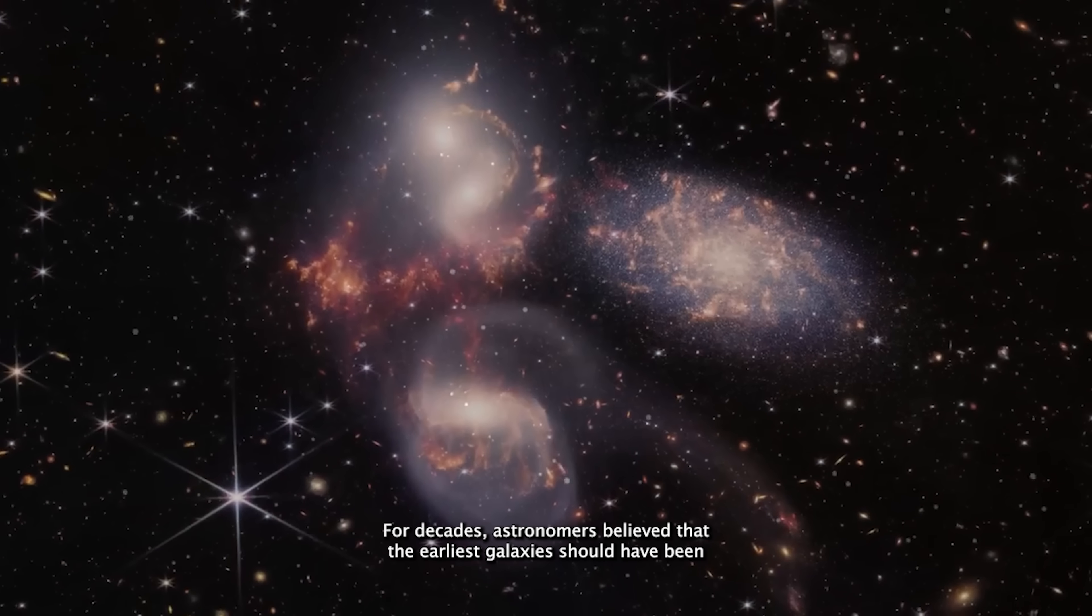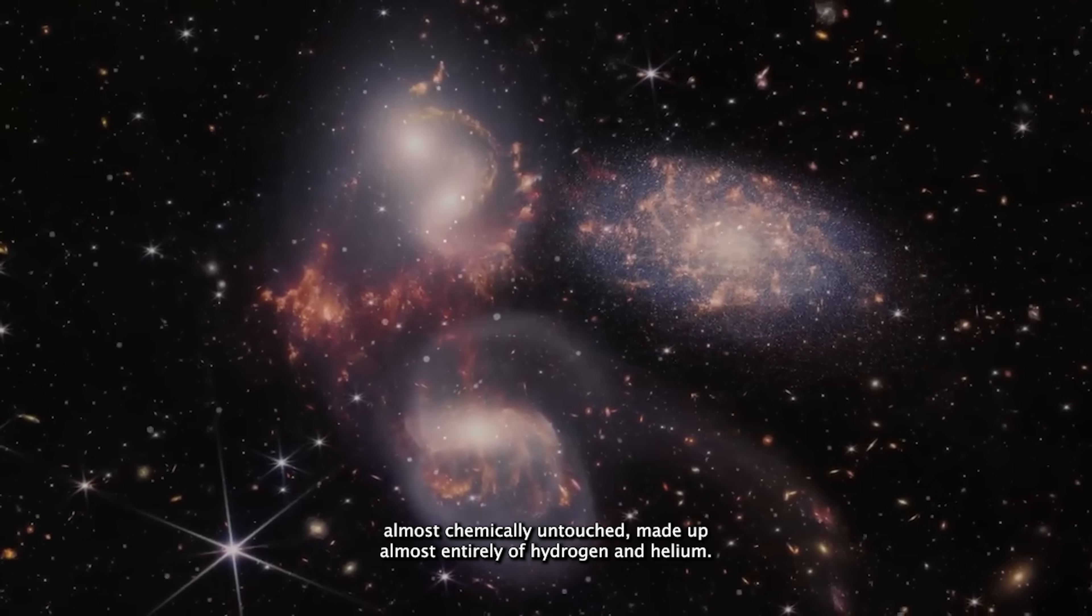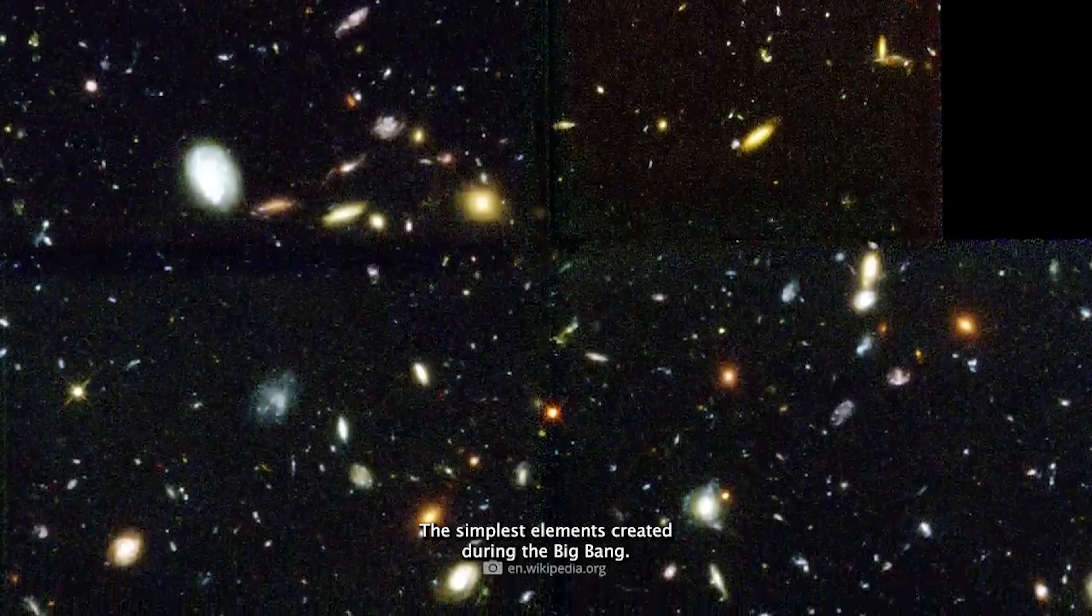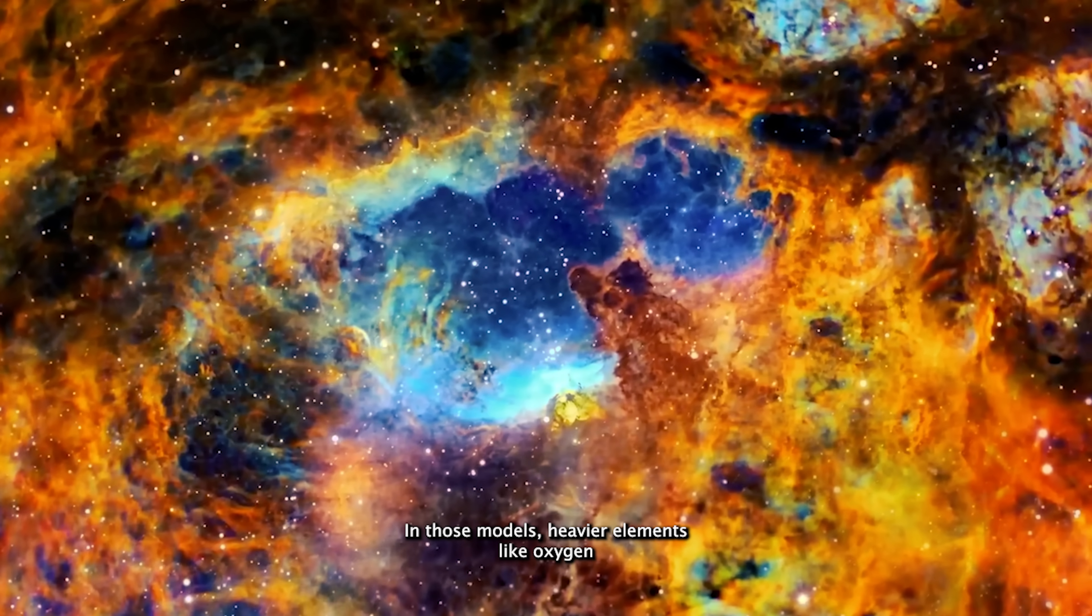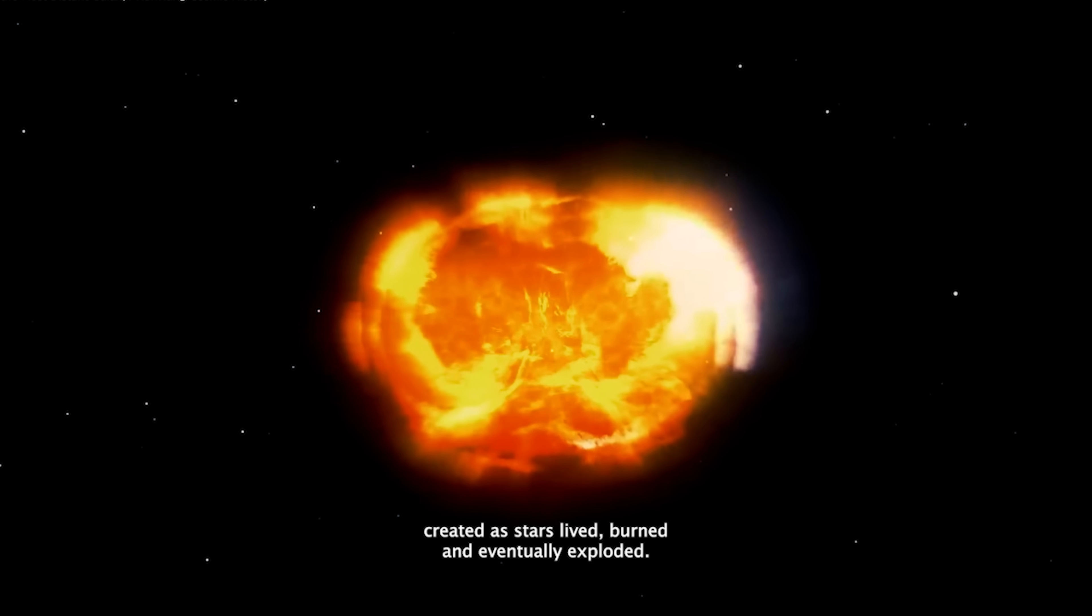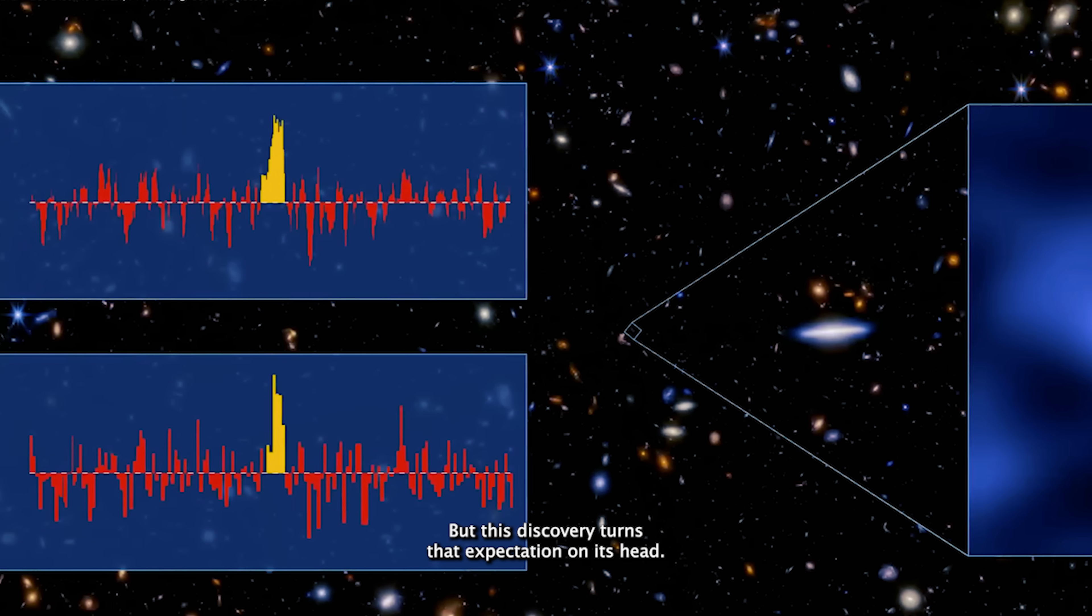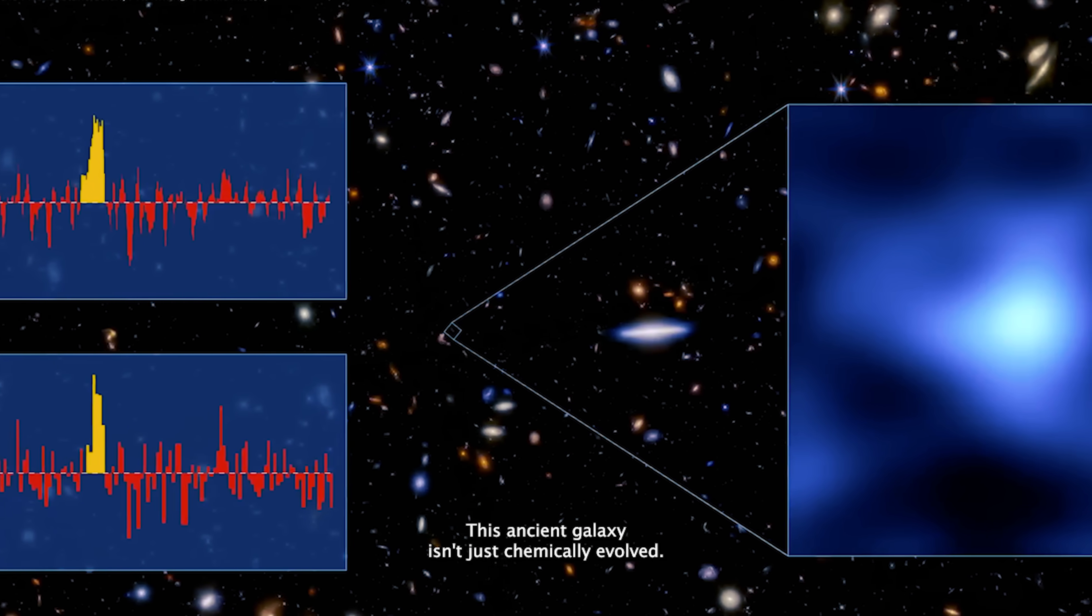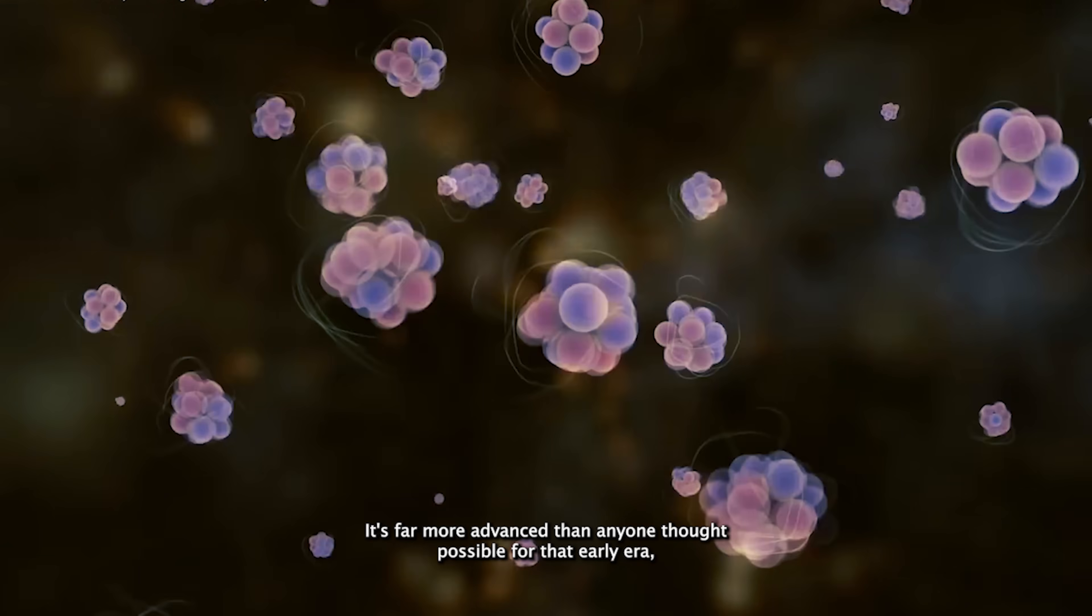For decades, astronomers believed that the earliest galaxies should have been almost chemically untouched, made up almost entirely of hydrogen and helium, the simplest elements created during the Big Bang. In those models, heavier elements, like oxygen, were expected to build up slowly over billions of years, created as stars lived, burned, and eventually exploded. But this discovery turns that expectation on its head. This ancient galaxy isn't just chemically evolved, it's far more advanced than anyone thought possible for that early era.